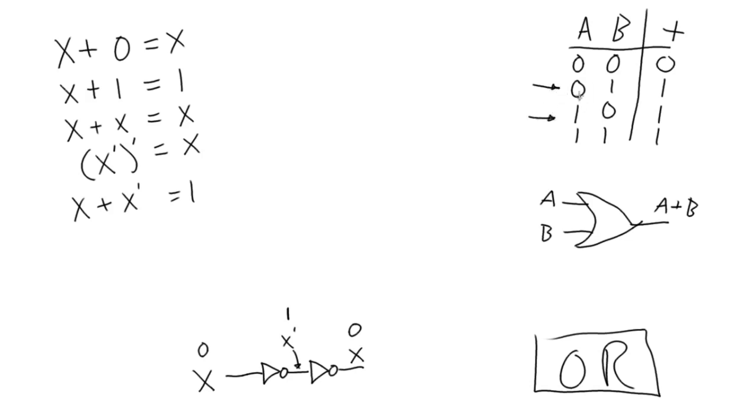And we see that for both of these rows, the output is a 1. So that's kind of how to make sense of these five theorems.